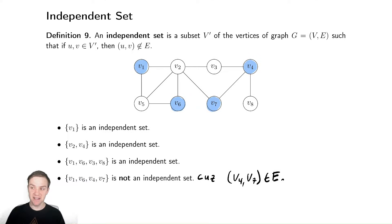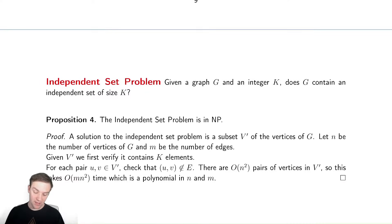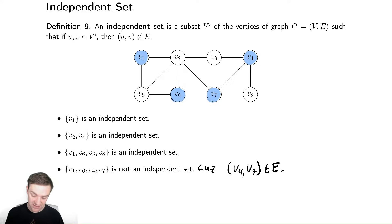So this is what an independent set is. The natural question might be what is the largest independent set? Alternatively, an easier decision problem is: is there an independent set of a fixed size? Here's our independent set problem: given a graph and an integer, does it have an independent set of that size? If we were asked, does it have an independent set of size 4? The answer would be yes.